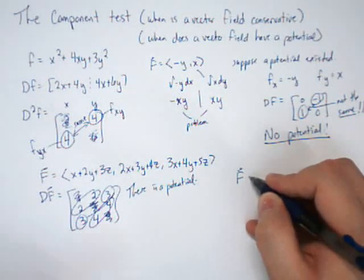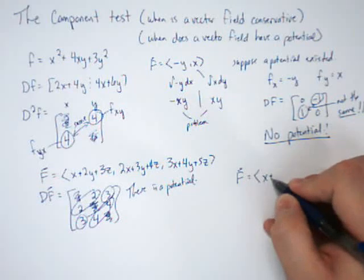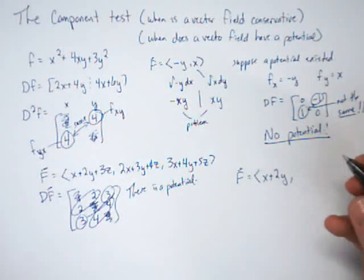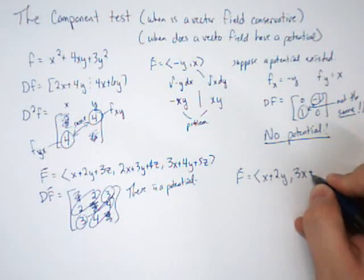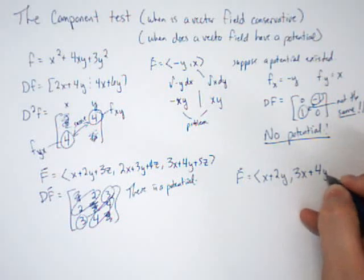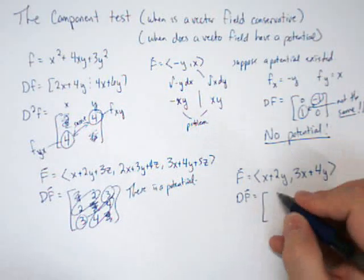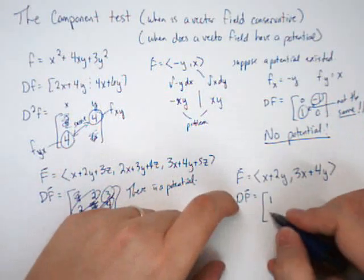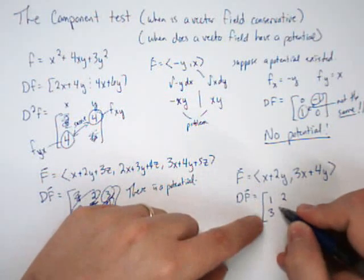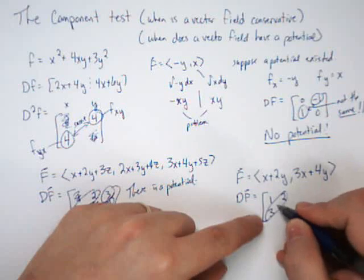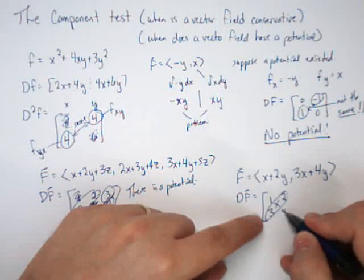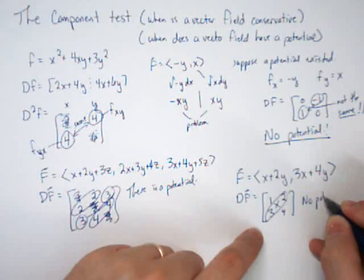Suppose I have a vector field, and let's just write down another one. Let's go x plus 2y, and 3x plus 4y. The derivative of this vector field is, with respect to x are 1 and 3, and with respect to y are 2. We actually already know the problem, they're not the same. I could have put a 4 here. But there is no potential.